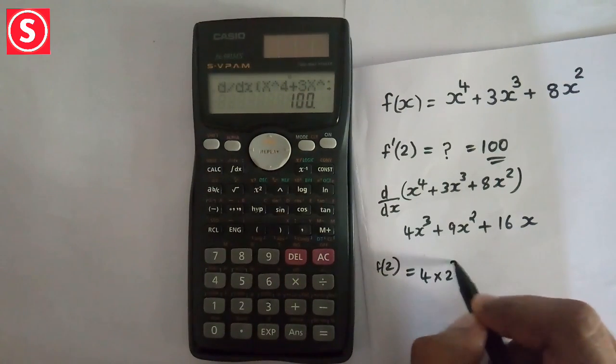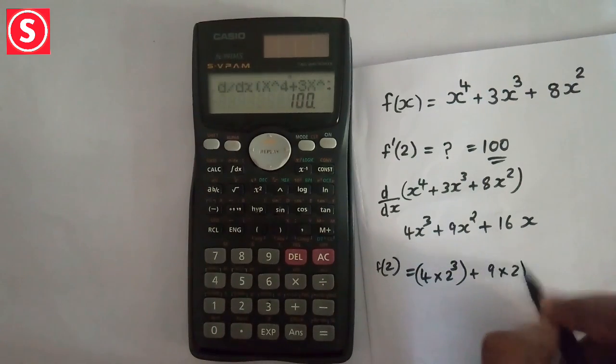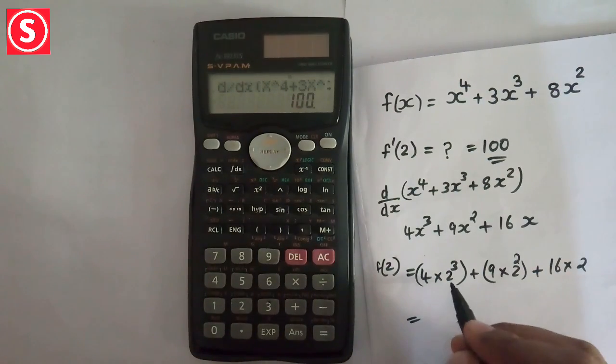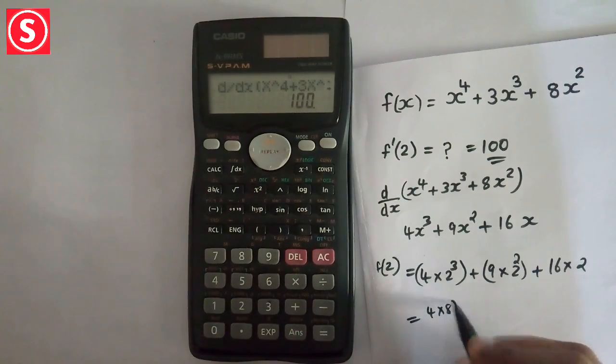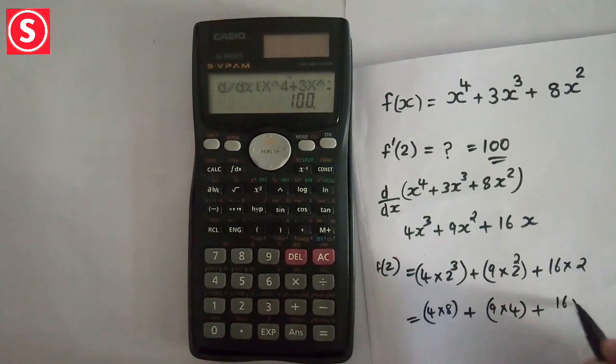So 4 × 2^3 plus 9 × 2^2 plus 16 × 2. It will be 4 × 8 plus 9 × 4 plus 16 × 2.